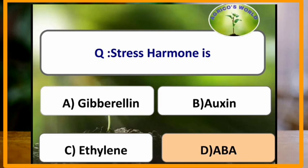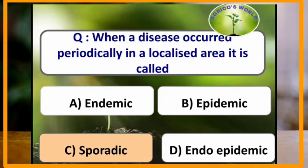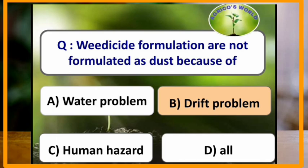Abscisic acid is called the stress hormone. When a disease occurs periodically in a localized area, it is called a sporadic disease. Weedicide formulations are not formulated as dust because of the drift problem.